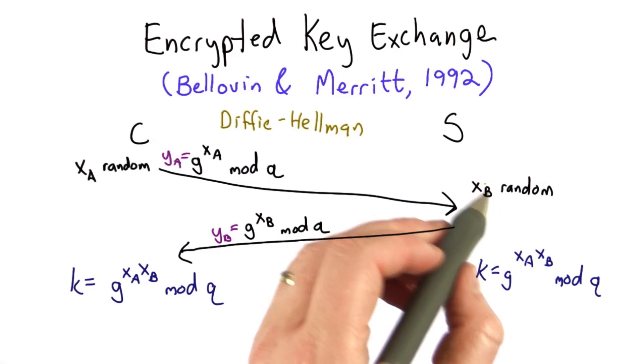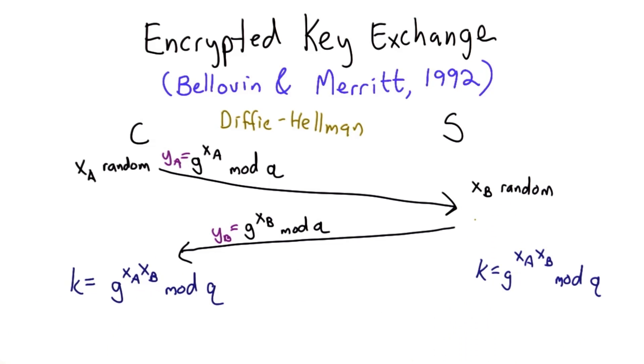The server picks a random xb value, raises g to that power, and sends the result to the client. They can both now compute the same key by raising the value they received to the power of their random value.